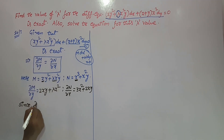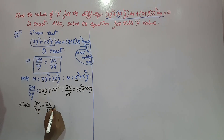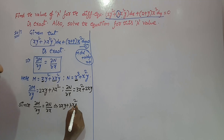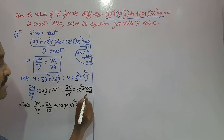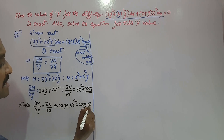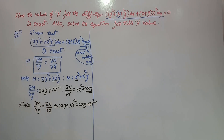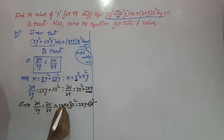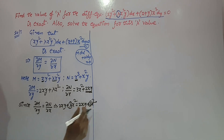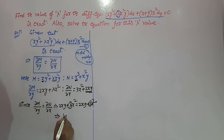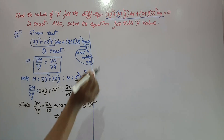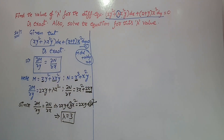Since the given equation is exact, we equate ∂M/∂y equal to ∂N/∂x: 2xy plus lambda x squared should equal 2xy plus 3x squared. By equating like terms on both sides, the 2xy terms cancel and x squared terms cancel, giving lambda equals 3. So if we replace lambda with 3 in this equation, the given equation becomes exact.